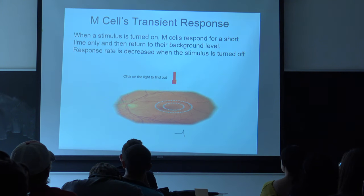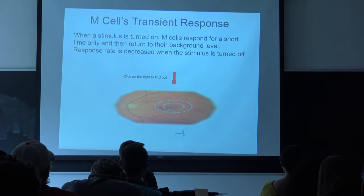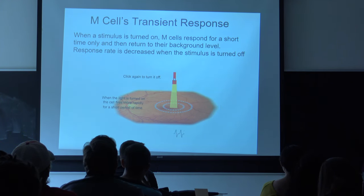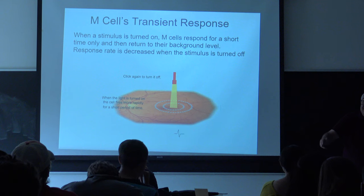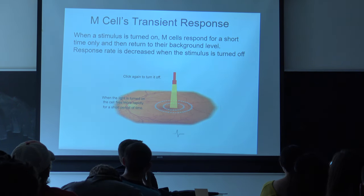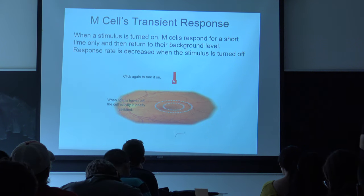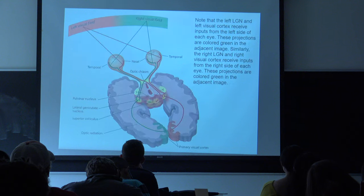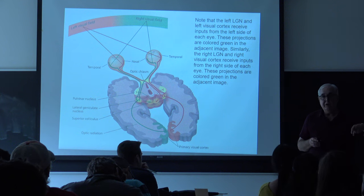M cells have a different behavior. With no light shining, the cell fires at its background rate. If you shine a light inside the positive part of the receptive field, the spike rate goes way up, but then it gradually slows back down to background rate. If you turn the light off, it slows to nothing and then creeps back up. These are sometimes referred to as transient neurons — they only respond to changes in the pattern of light, either a light being turned on or turned off.